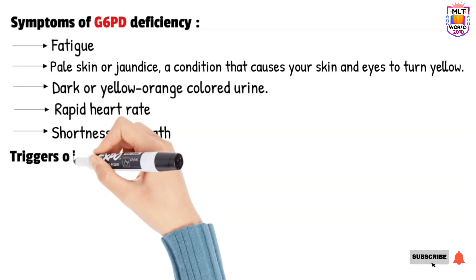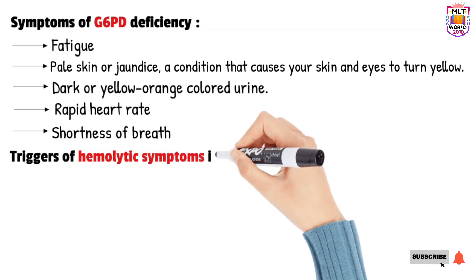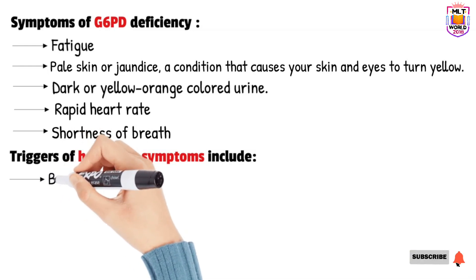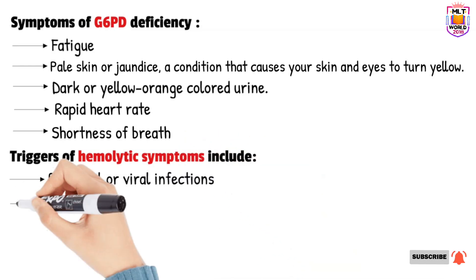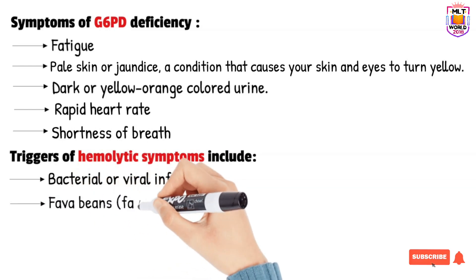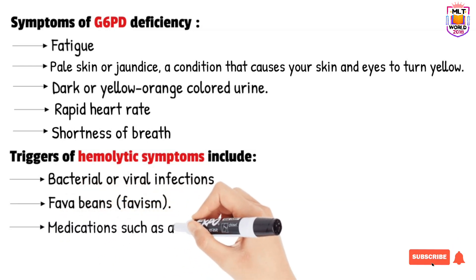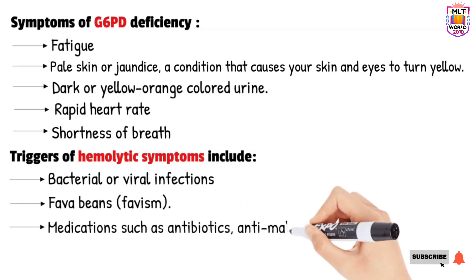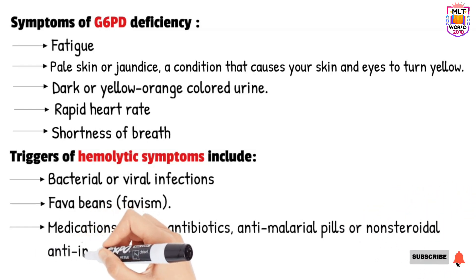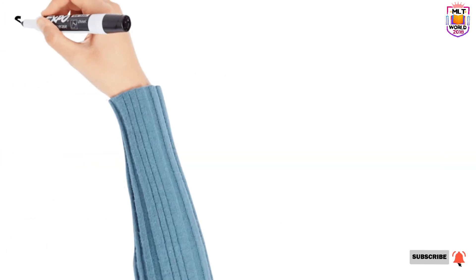What are the conditions that trigger G6PD or hemolytic symptoms? These include bacterial and viral infections, fava beans (which we call favism), and medications such as antibiotics, antimalarial tablets, or non-steroidal anti-inflammatory drugs, which we call NSAIDs.